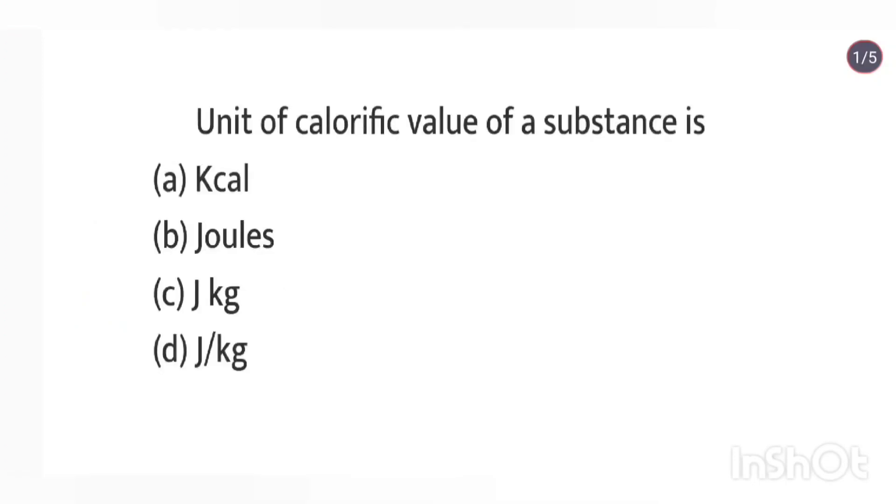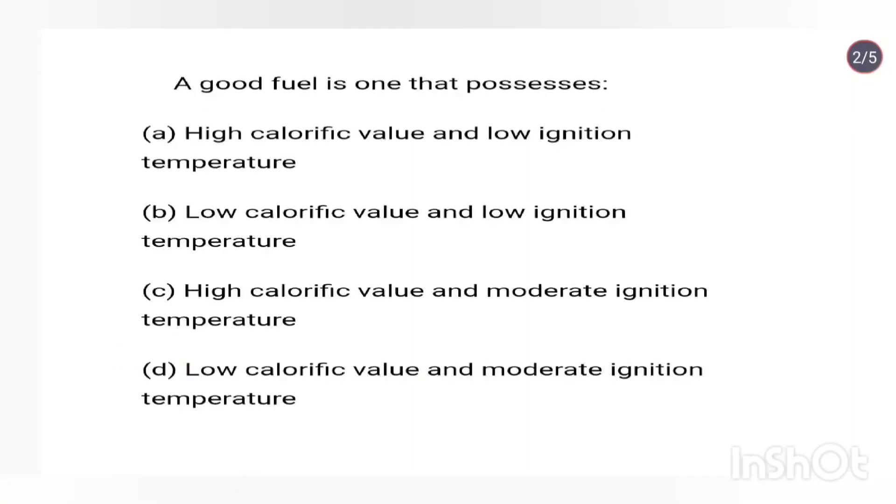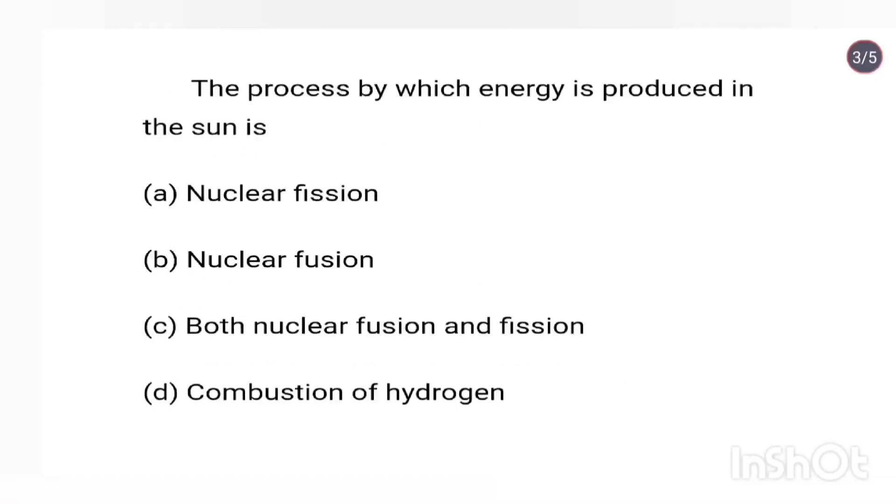Unit of calorific value of a substance is joule per kg. A good fuel is one that possesses high calorific value and moderate ignition temperature. The process by which energy is produced in the sun is nuclear fusion.